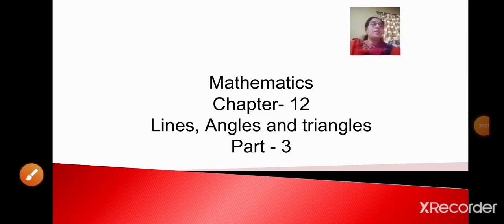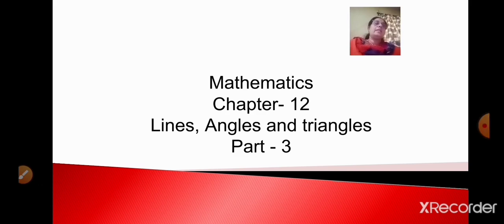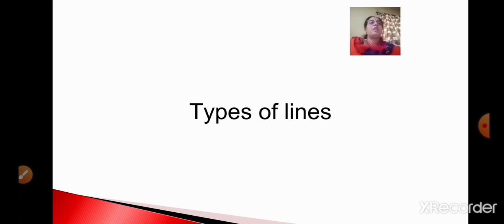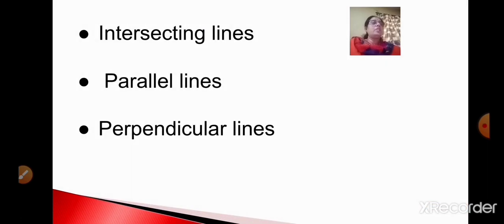Hello, welcome back. Today is Sairam. Today let us continue with part 3 of chapter 12, that is lines, angles and triangles. Today we will be studying about the different types of lines. We will be studying about three types of lines: intersecting lines, parallel lines and perpendicular lines.